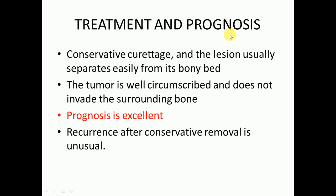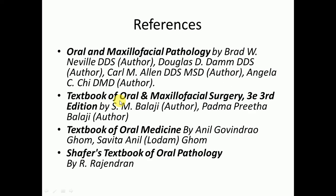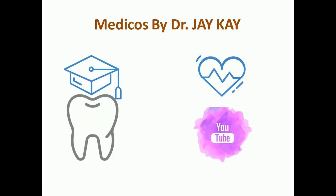Conservative curettage is the treatment of choice for ameloblastic fibroodontoma, and the lesion usually separates easily from its bony bed compared to ameloblastic fibroma, which has controversial treatment planning. The tumor is well-circumscribed and does not invade surrounding bone. Prognosis is excellent and recurrence after conservative removal is unusual, making it easier to treat than ameloblastic fibroma.